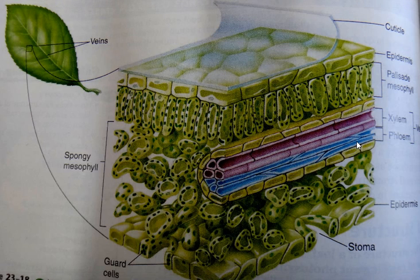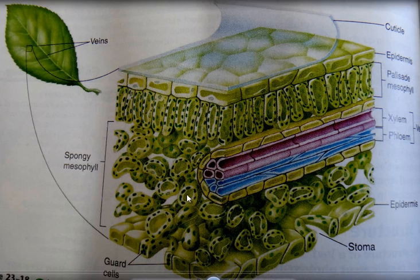More specifically, phloem transports photosynthates — substances that were produced by photosynthesis. Sucrose is the main sugar transported in the phloem. And the stoma, as I told you, is responsible for the transport of gases: carbon dioxide into the leaf and oxygen out of the leaf. We have special movements of these structures that we will study later in plant physiology.